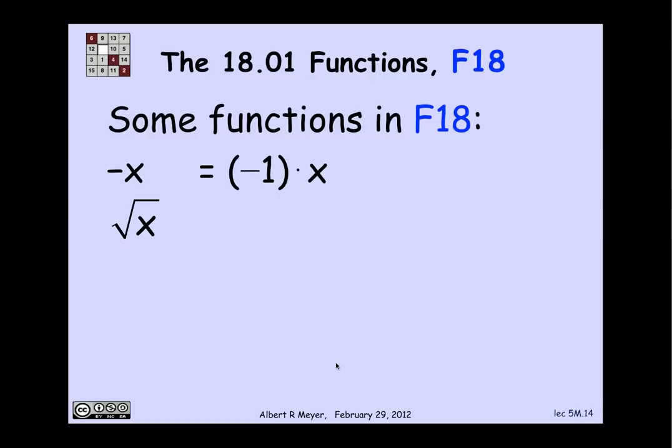What about the square root of x? Well, if I multiply the identity by itself, I get the function x squared. And then if I take its inverse, that's square root of x.